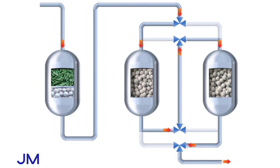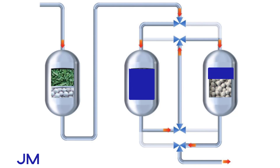In a lead-lag configuration, the process gas flows through both vessels, each performing the same function. The benefit of this system is that once the first vessel breaks through sulfur and reaches full saturation, the flow can be diverted to the second vessel, allowing the first vessel to maximize its sulfur capacity while being changed without the need for a shutdown. In this configuration the order of catalysts and absorbents is the same, but the overall sulfur removal is maximized.